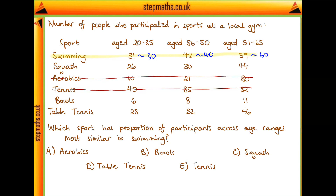What about squash and table tennis? Half of 44 is 22, so our value of 26 is a little bit high for that. And three quarters of 30 is also about 22 or 23. So for squash to have a similar ratio to swimming, we'd actually want the youngest age range to be about 22, but the number we have is a little bit too high.